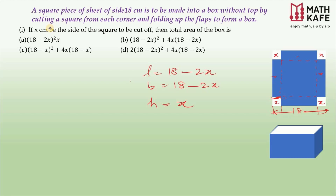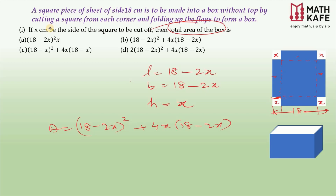Don't rush — usually you see questions about volume, but here the first part asks for the area of the box. The base area is length times breadth, both equal to 18 minus 2x, giving (18 − 2x)². For the four walls, each has height x and width 18 minus 2x, so the total side area is 4 × x × (18 − 2x). Always look at the options before rushing to the answer.